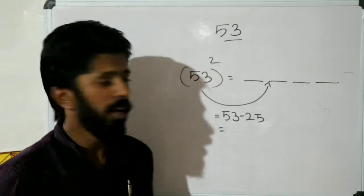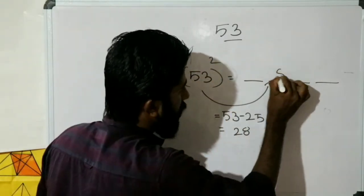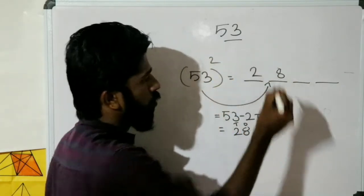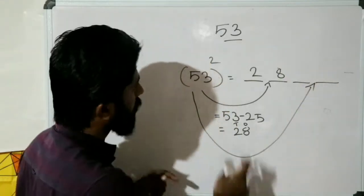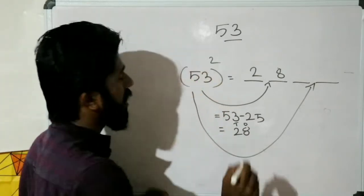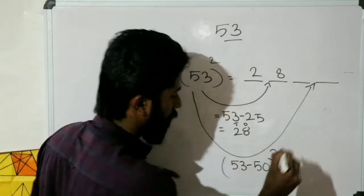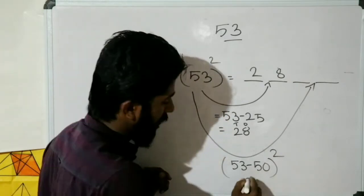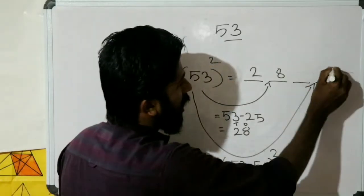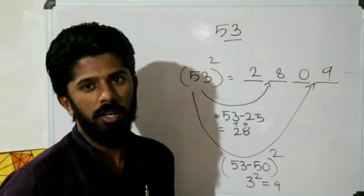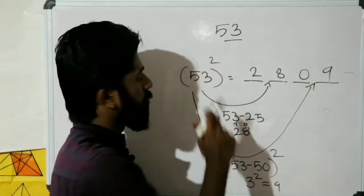53 minus 25 gives us 28. Then we compute N minus 50: 53 minus 50 gives 3. 3 whole square is 9. So we place 09 at the end. The first part is 28, giving us 2809.